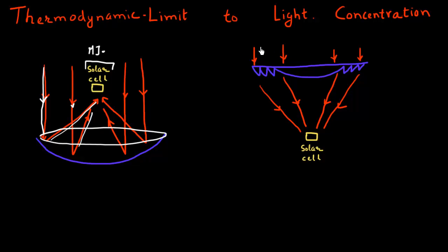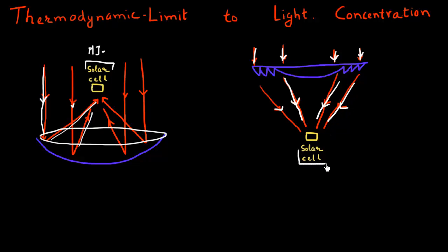Shown here is another such system. Over here you have this Fresnel lens, which is placed over here, and this is collecting all the sunlight coming from the sun. It concentrates it into this narrow beam, which is then made incident on this solar cell. These systems currently have concentrations of 500x, 1000x, or 1500x.